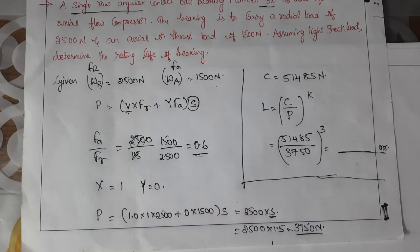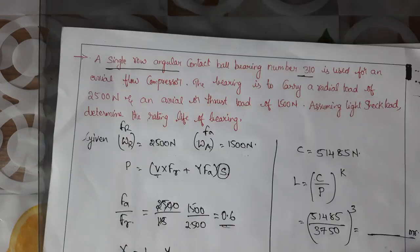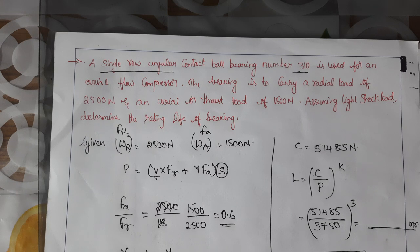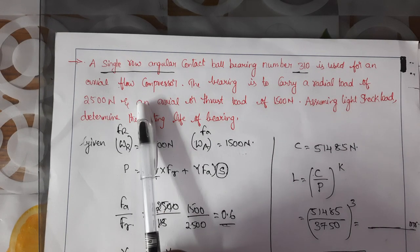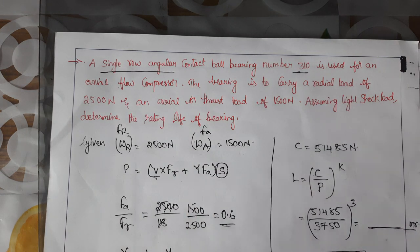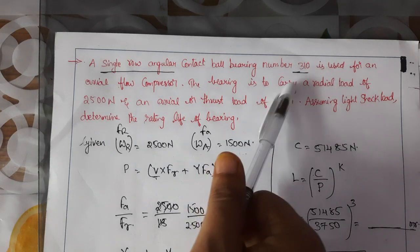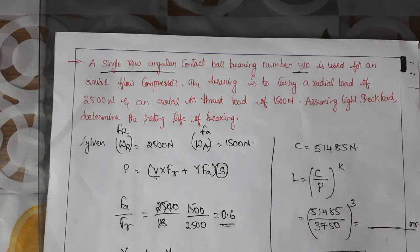This completes the example of the single row angular contact ball bearing with bearing number 310. In the next problem, we will look at a case where the bearing number is missing, and go step by step to get a clear understanding of ball bearing problems.